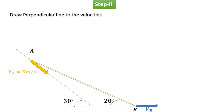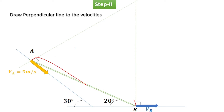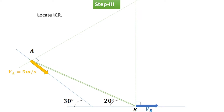Step two: draw a perpendicular line to the velocity. From point B, take a 90-degree angle and draw a line perpendicular to Vb. Similarly, draw a perpendicular line from point A perpendicular to Va. Extend the length of each line in both directions. Always remember: draw the perpendicular to the velocity line, not to the rod AB. This is how we draw the two perpendicular lines.